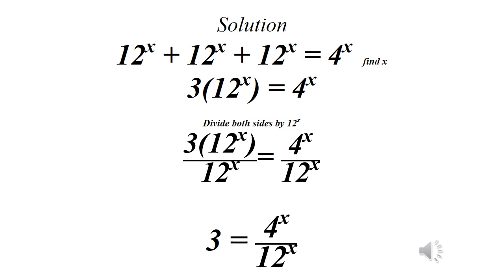So we have 12 raised to power x in three places. We can use 3 as the coefficient: 3 times bracket 12 raised to power x equals 4 raised to power x. So we divide both sides by 12 raised to power x.